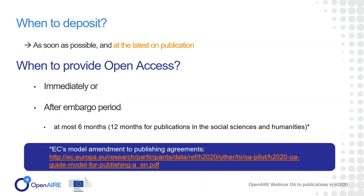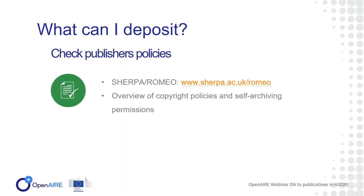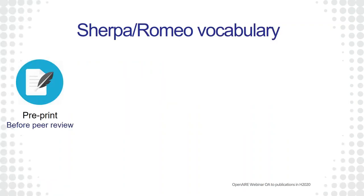You can provide open access immediately if you publish in an open access journal, or otherwise after an embargo period — allowed at most six months, with an exception for social sciences and humanities where a 12-month embargo is allowed. If your publisher does not allow this or has a longer embargo, the EC provides a model amendment to publisher agreements that you can use to ask the publisher to shorten the embargo period so you can comply with the EC's open access mandate. There's a website called Sherpa Romeo where you can check all publisher policies and get an overview of copyright policies and self-archiving information.